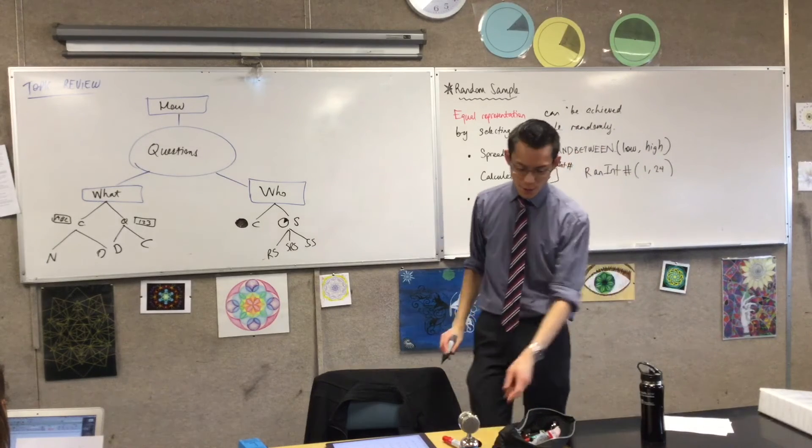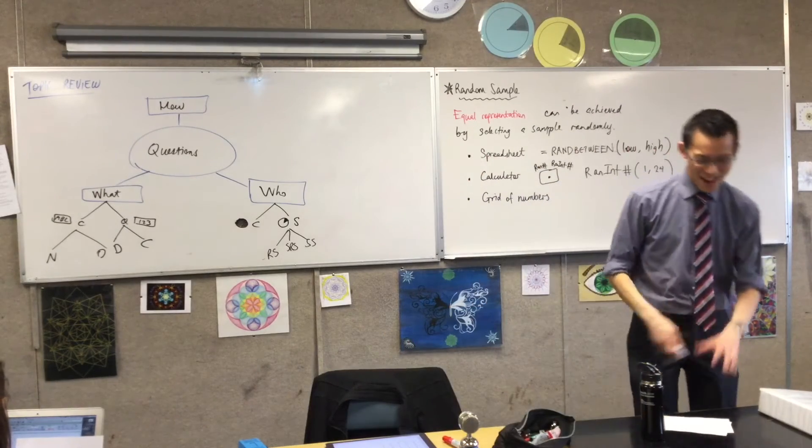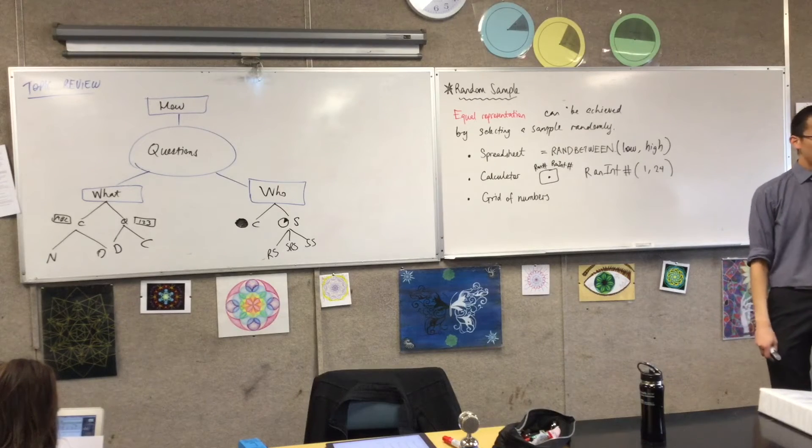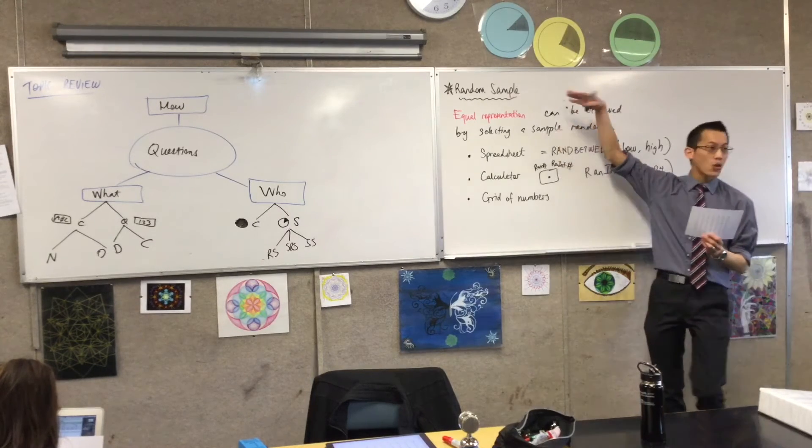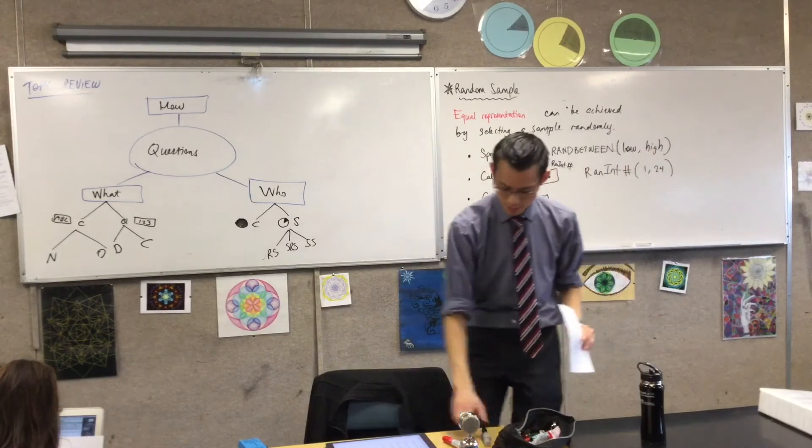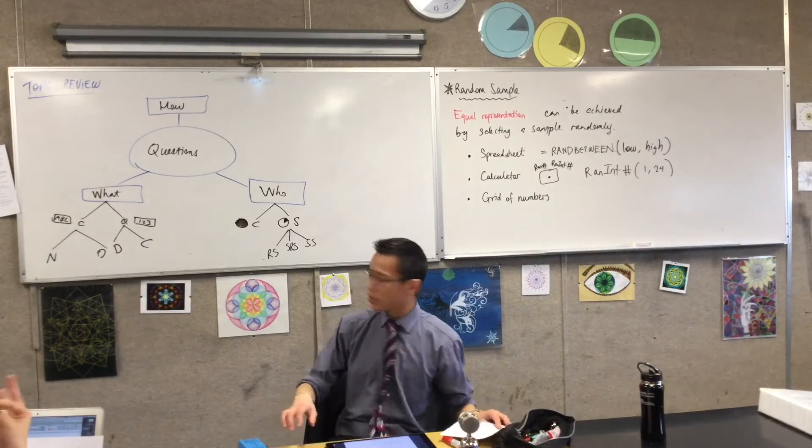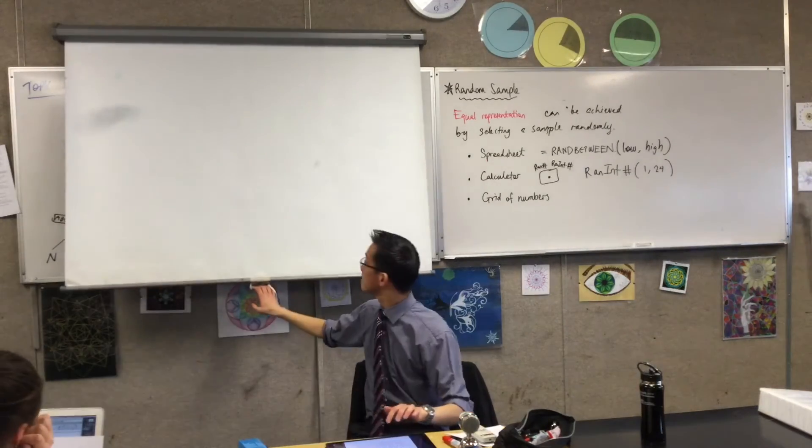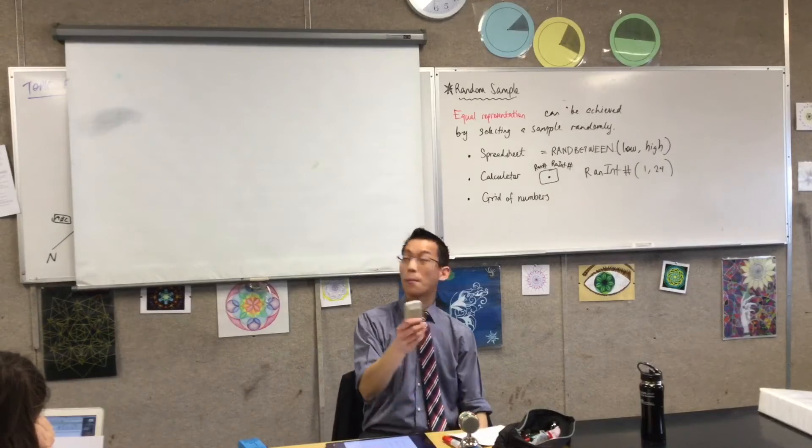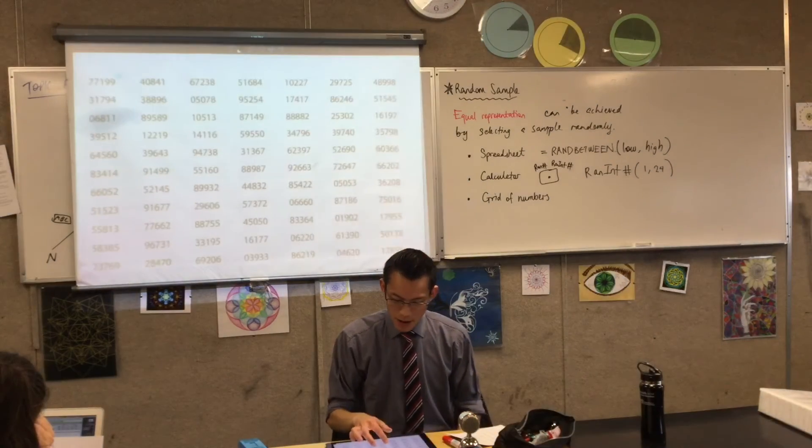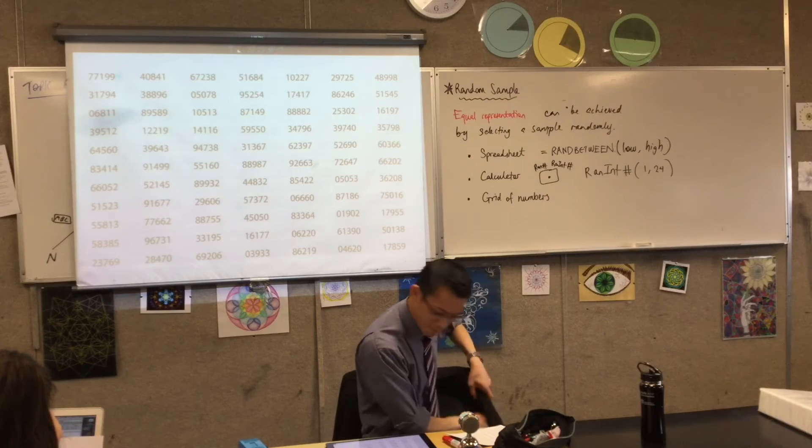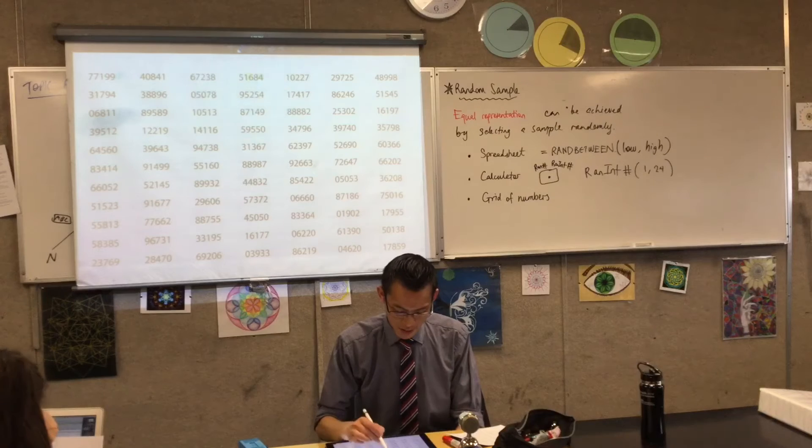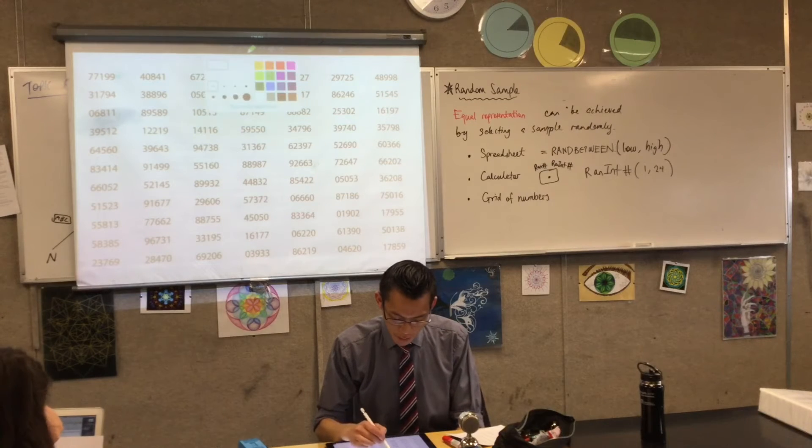So if for instance you find yourself out in the desert and you have no technology that you have access to, right, if you have something as simple as a grid of numbers, you can use one of these to get out your random sample number. So let me show you how to do this. I need to turn this back on. Okay, there we go. Are our numbers the same? Yes.